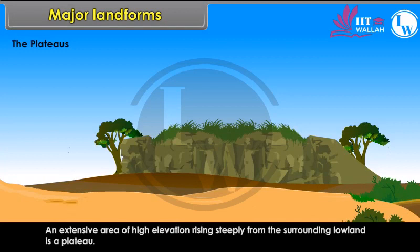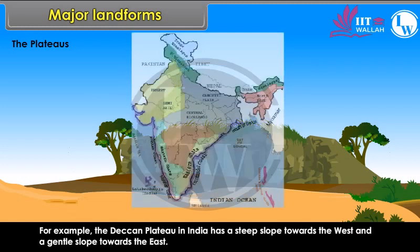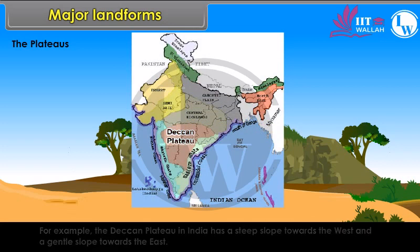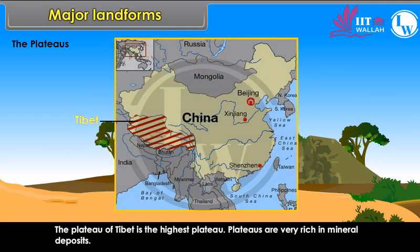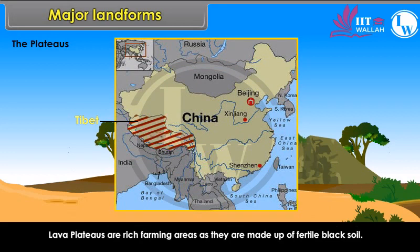An extensive area of high elevation rising steeply from the surrounding lowland is called a plateau. Some plateaus have steep slopes on one side only and gentler slopes on other sides. For example, the Deccan Plateau in India has a steep slope towards the west and a gentle slope towards the east. The plateau of Tibet is the highest plateau. Plateaus are very rich in mineral deposits. Lava plateaus are rich farming areas as they are made up of fertile black soil.